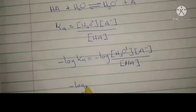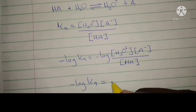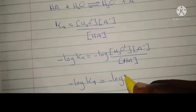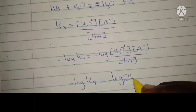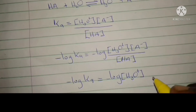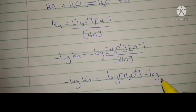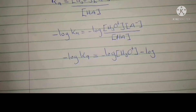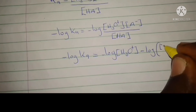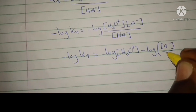So we have the negative log of Ka. We then separate the terms: negative log of the hydroxonium ion concentration, plus the negative log of the concentration of the conjugate base divided by the concentration of the acid.